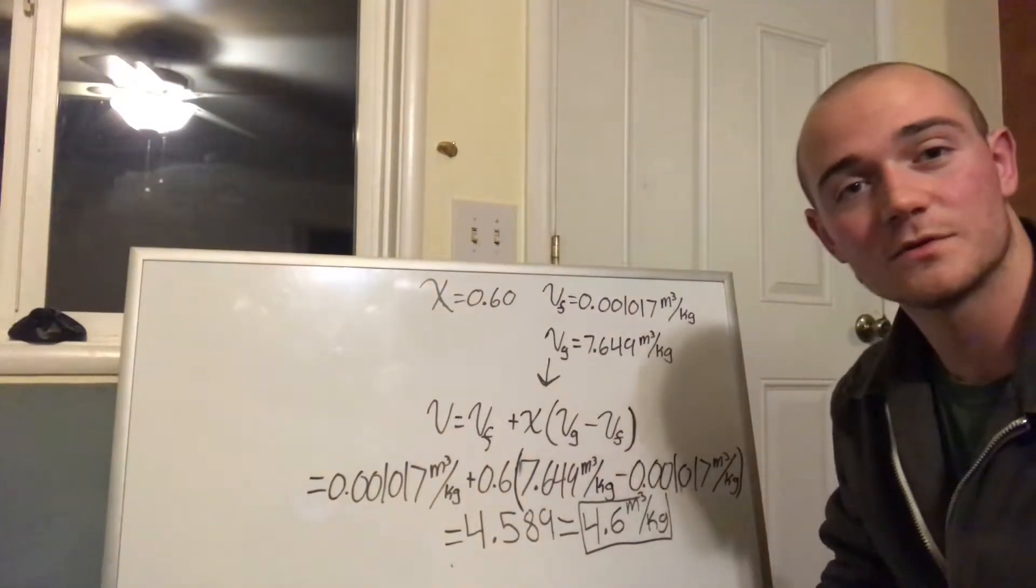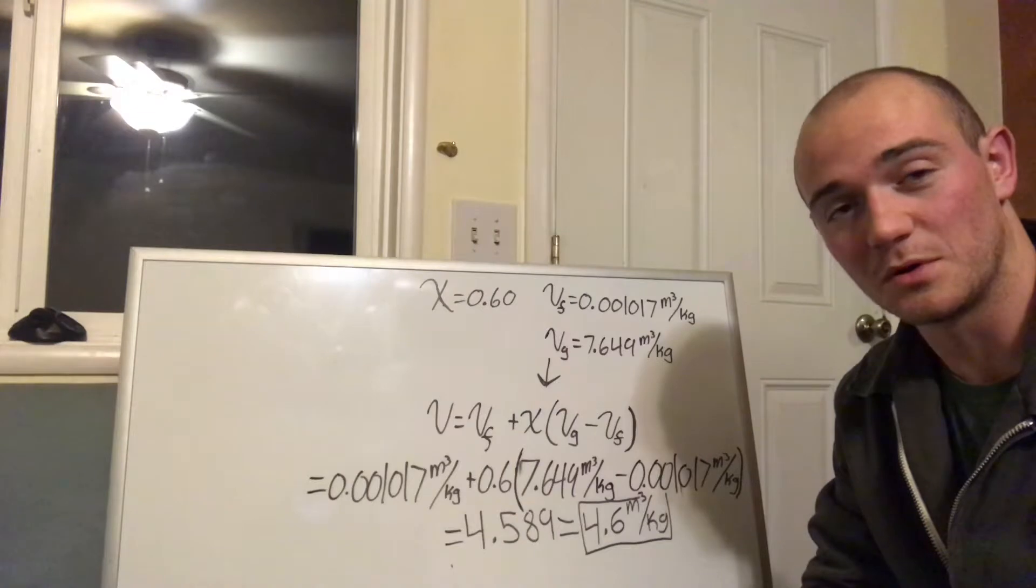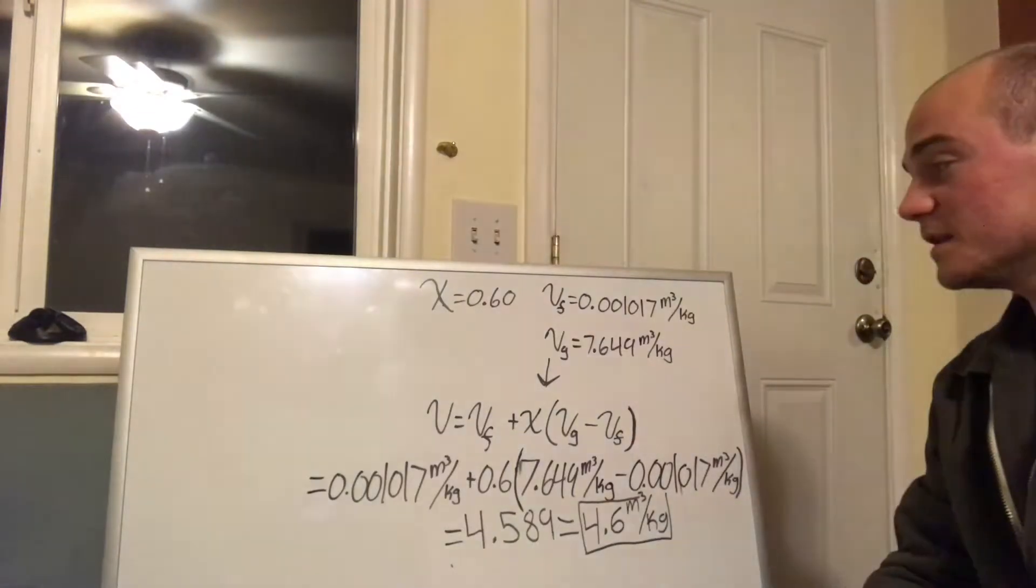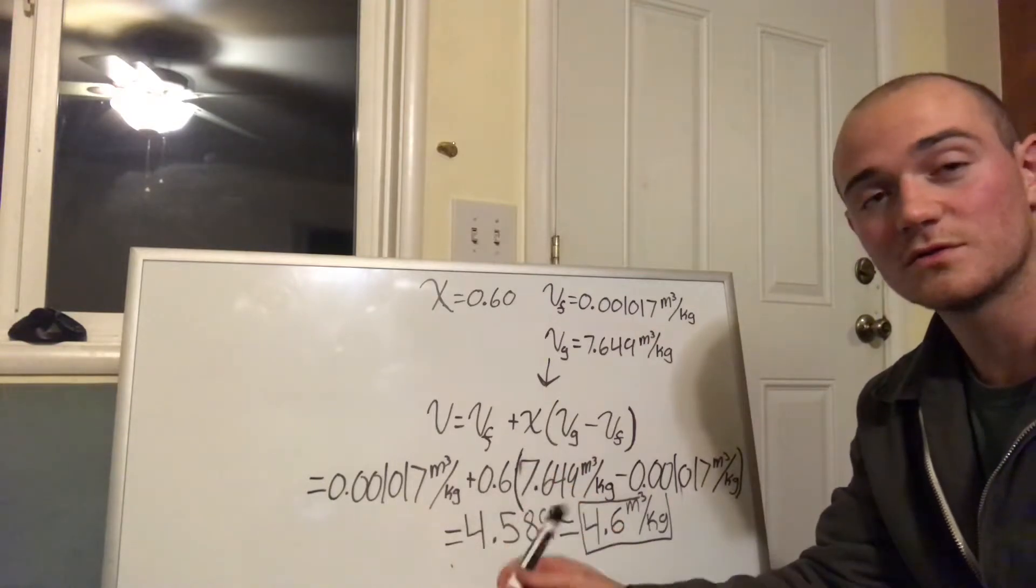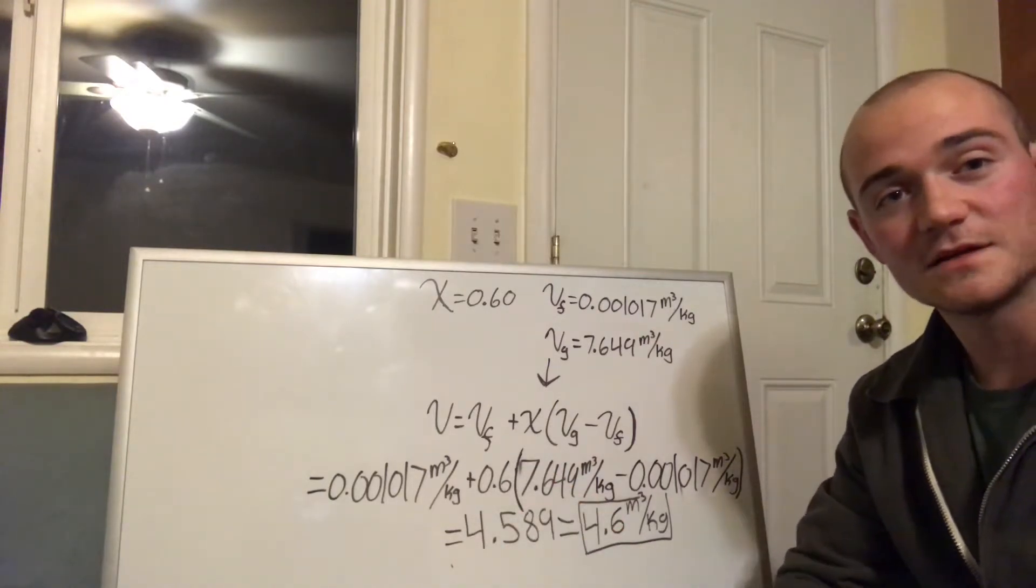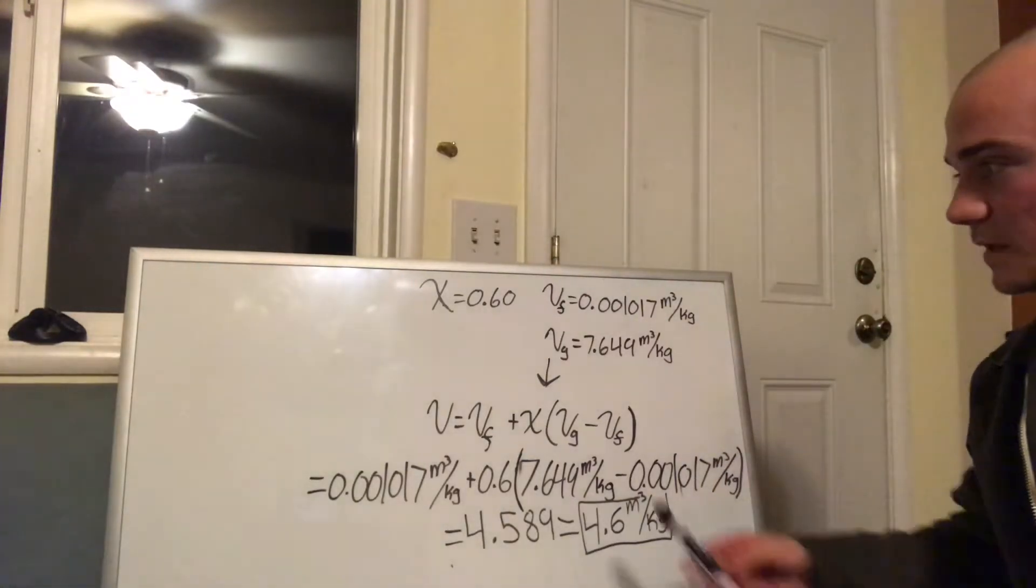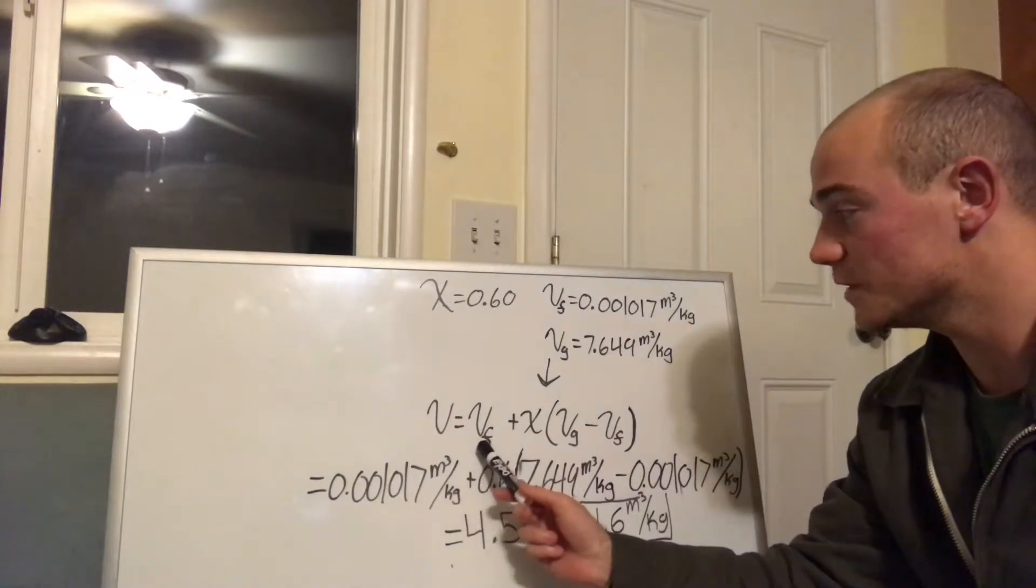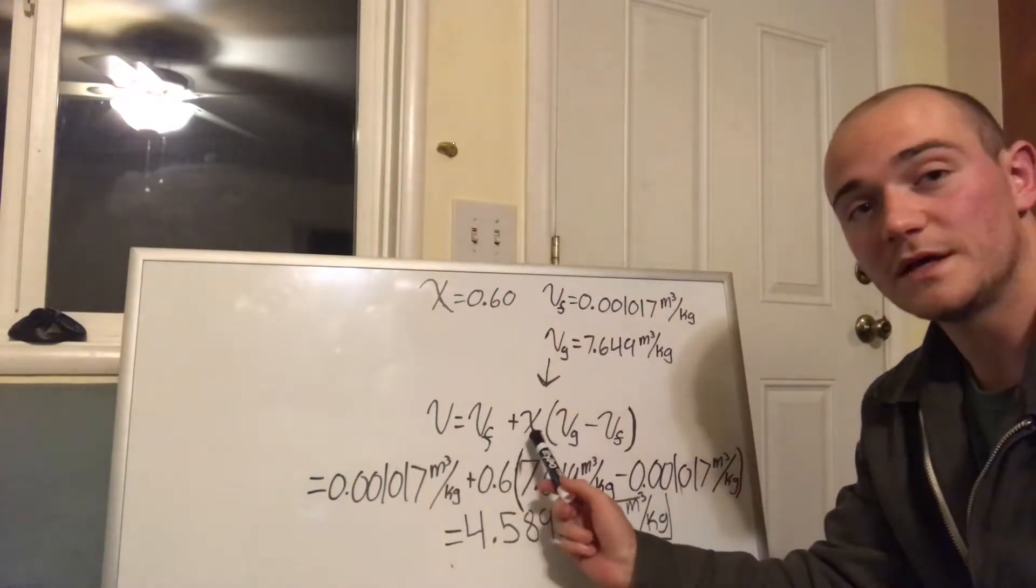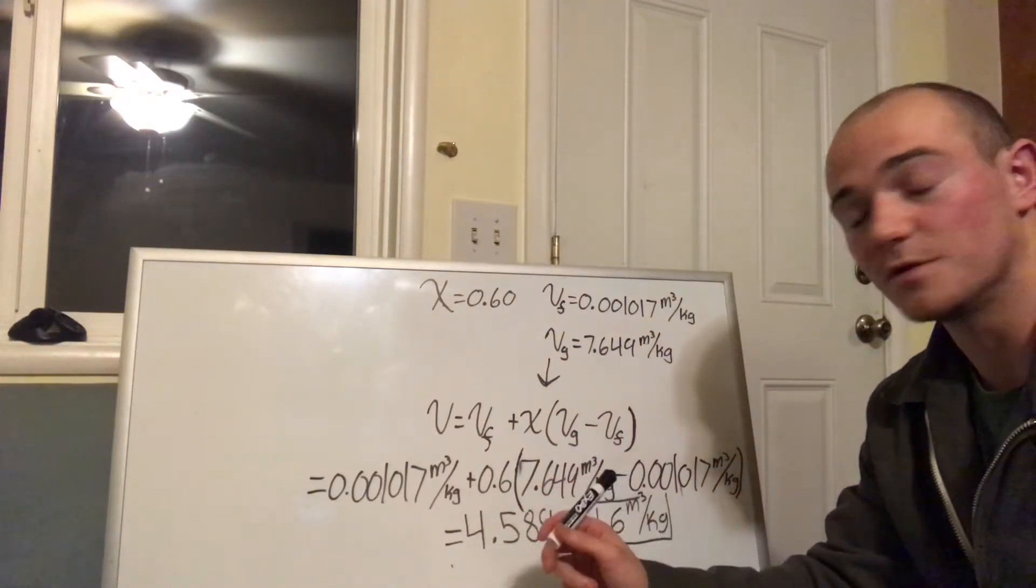Now that we have our variables, our specific volume of the fluid and the specific volume of the vapor identified, we can then put it into the equation using quality and those other two to find the specific volume of the substance. So this equation is: specific volume equals specific volume of the fluid plus the quality times specific volume of the vapor minus specific volume of the fluid. You put in all of those variables and your final answer should be 4.6 meters cubed per kilogram.